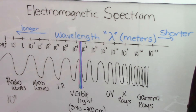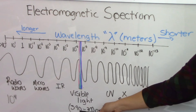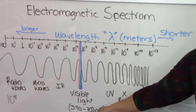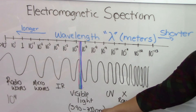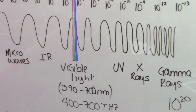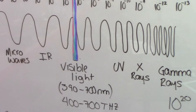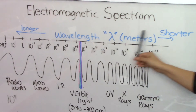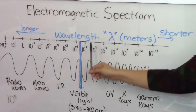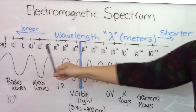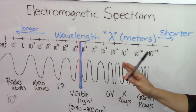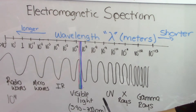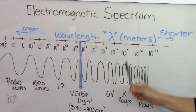The only area where you can see is here. You can only see wavelengths that are between 390 to 700 nanometers. Everything else we cannot see — our eye cannot see it. We are subjected to it and we can experience it, but we cannot see it.